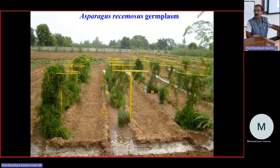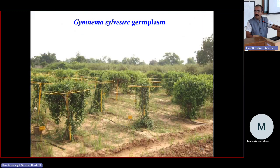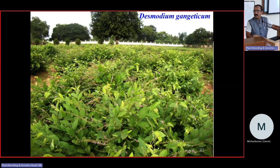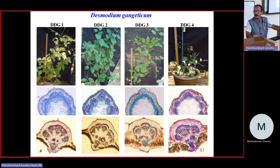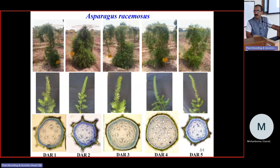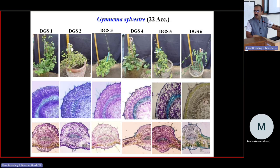The germplasm of Shatavari (Asparagus racemosus) has been successfully maintained. Gymnema sylvestre germplasm — a high fruit-producing Madhunashini germplasm — has been characterized for yield-contributing traits. Studies have also been conducted on Desmodium gangeticum along with physiological studies on Asparagus and Gymnema sylvestre.